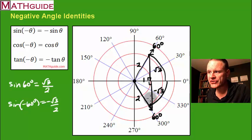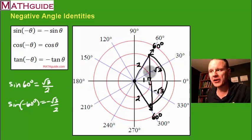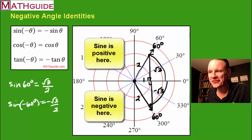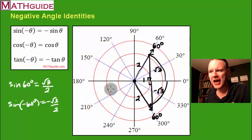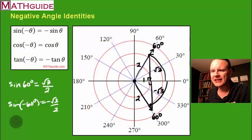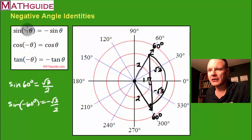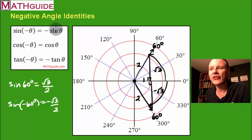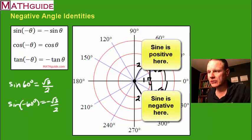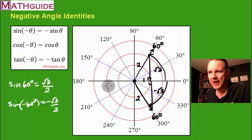Likewise, if you get an obtuse angle — say 150 degrees in the second quadrant and negative 150 degrees in the third quadrant — they also would be opposite each other because the y values are opposite. In general, if you take the sine of an angle rotating in the opposite direction, it's just going to be the opposite of the sine in the positive direction, because quadrant one has a positive y value while quadrant four has a negative y value.